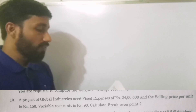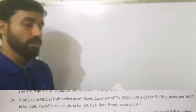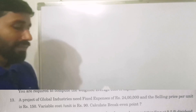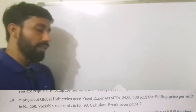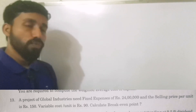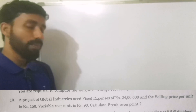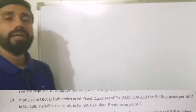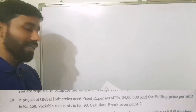A project of Global Industries needs fixed expenses of Rs. 24 lakhs. The selling price per unit is Rs. 150 and the variable cost per unit is Rs. 90. We are going to calculate the break-even point.